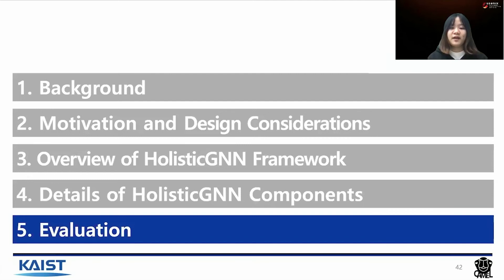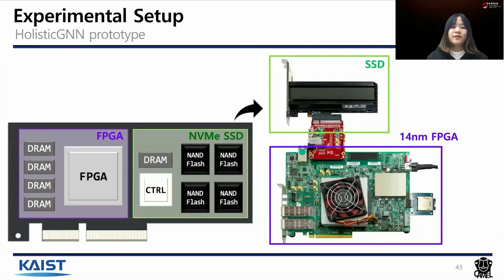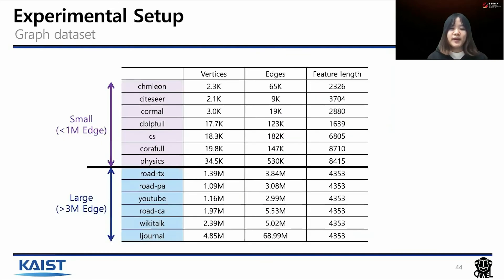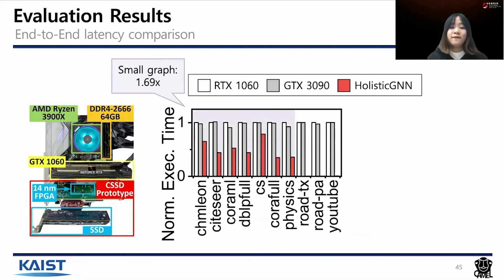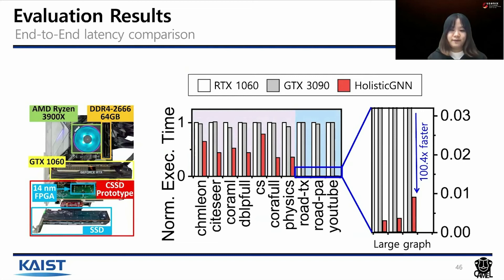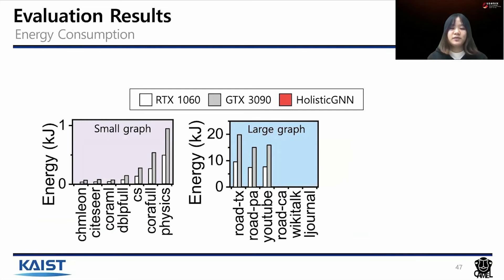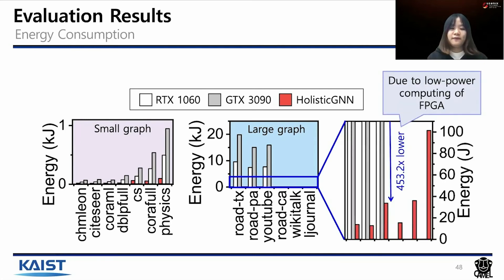Let me introduce the evaluation results of Holistic GNN. We implemented the Holistic GNN prototype with a 14nm FPGA and SSD, and tested 13 graph datasets categorized into small and large based on the number of edges. Comparing Holistic GNN performance to high-performance GPUs, we achieve two times faster inference time for small graphs, while achieving more than 100 times faster inference time for large graphs. We also tested energy consumption and achieved 33x and 16x better energy consumption for each GPU type respectively, and almost 500x better energy consumption for large graphs. This energy-efficient execution is due to the low-power computing of the FPGA.